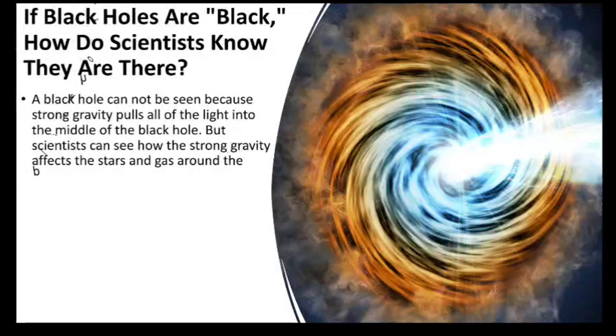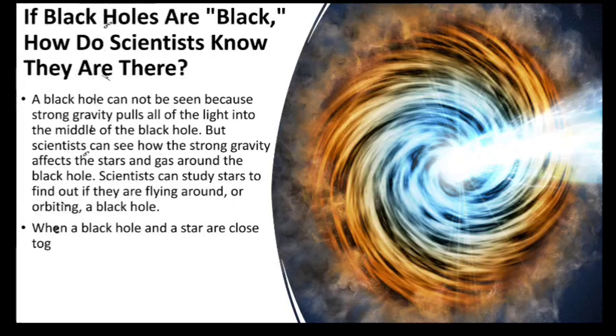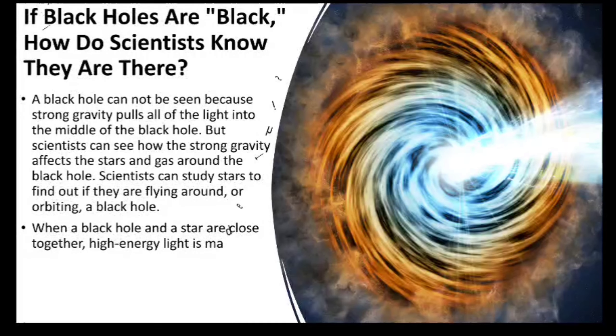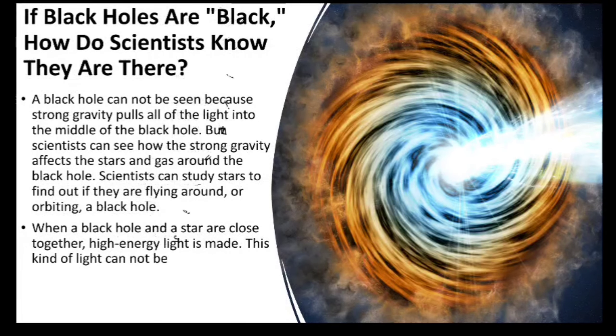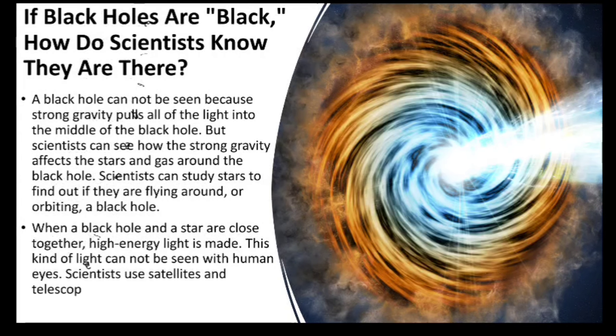Scientists can study stars to find out if they are flying around, or orbiting, a black hole. When a black hole and a star are close together, high-energy light is made. This kind of light cannot be seen with human eyes. Scientists use satellites and telescopes in space to see the high-energy light.